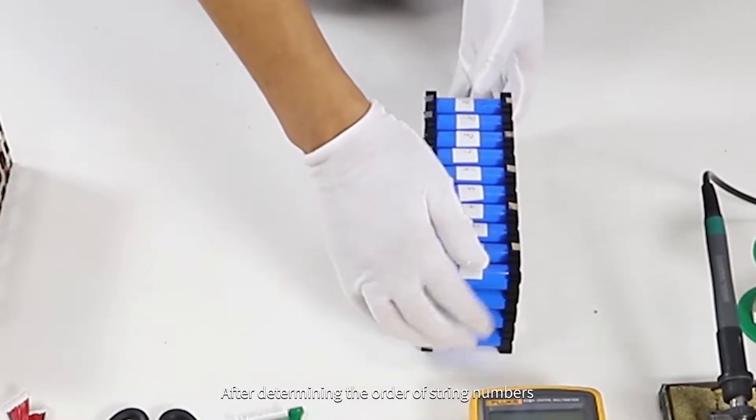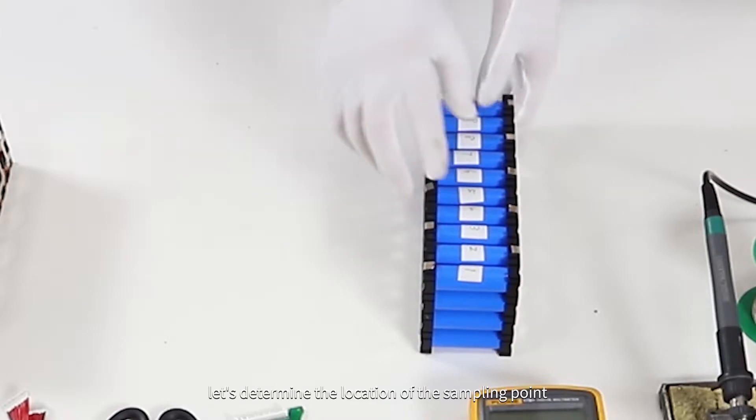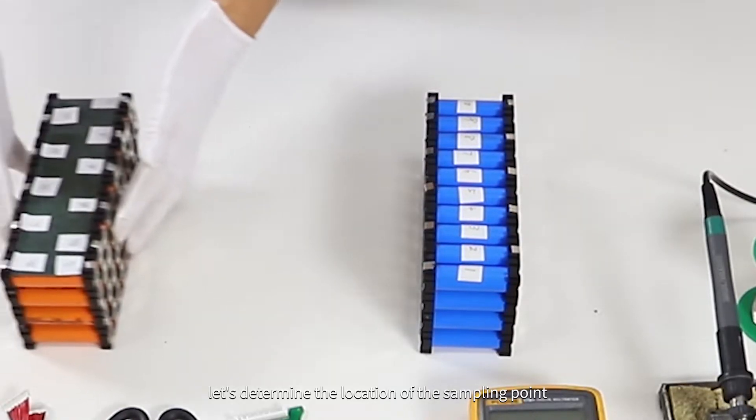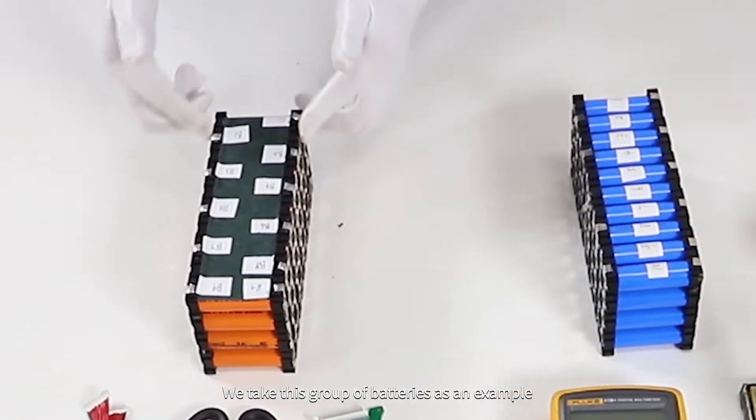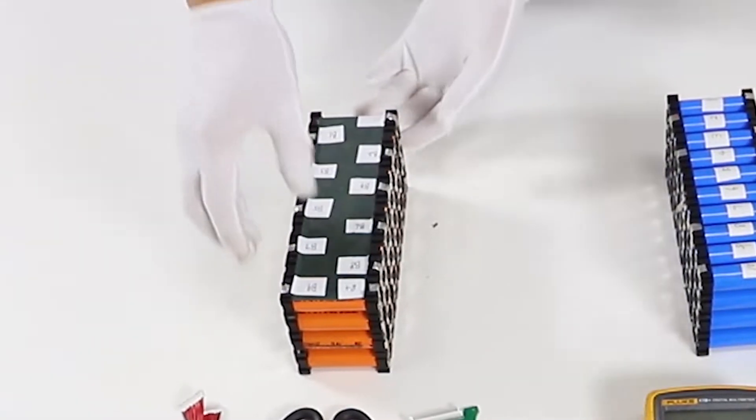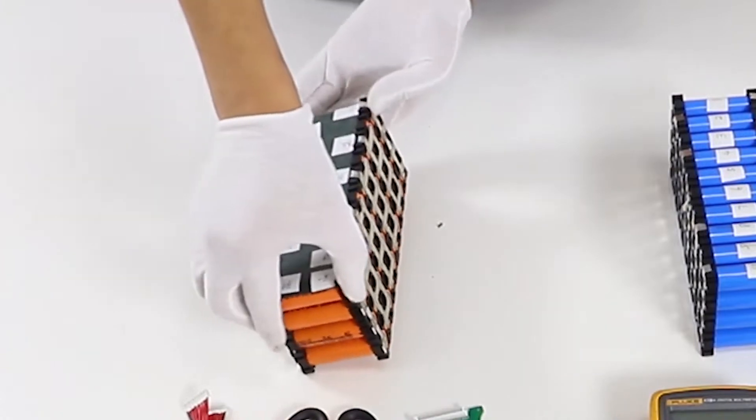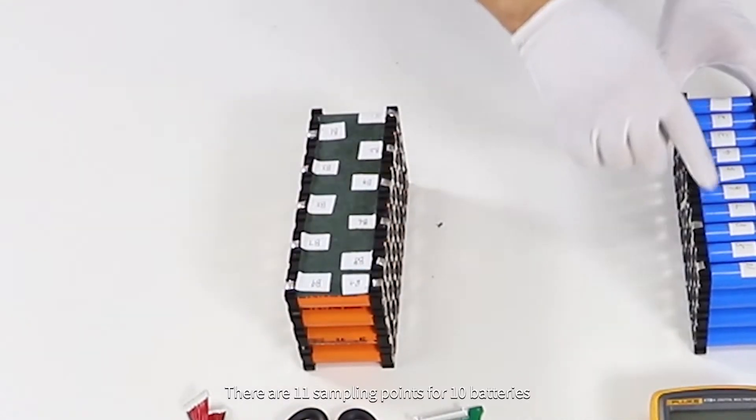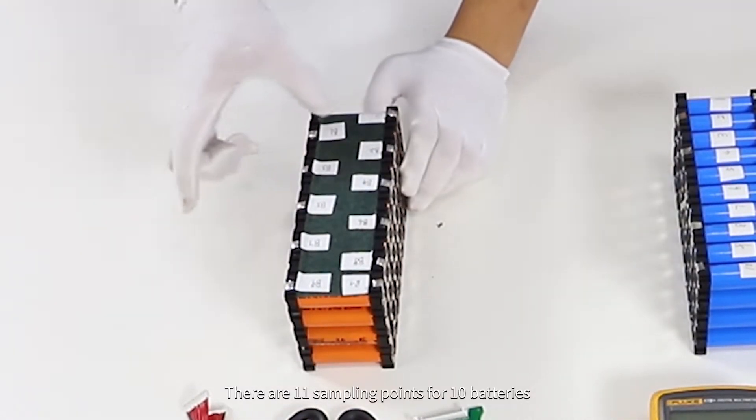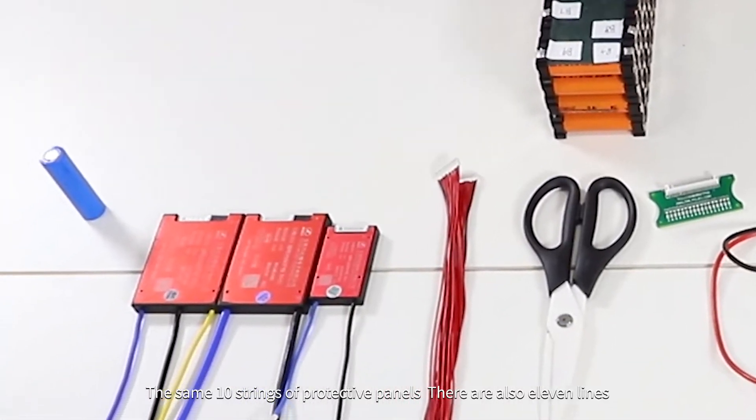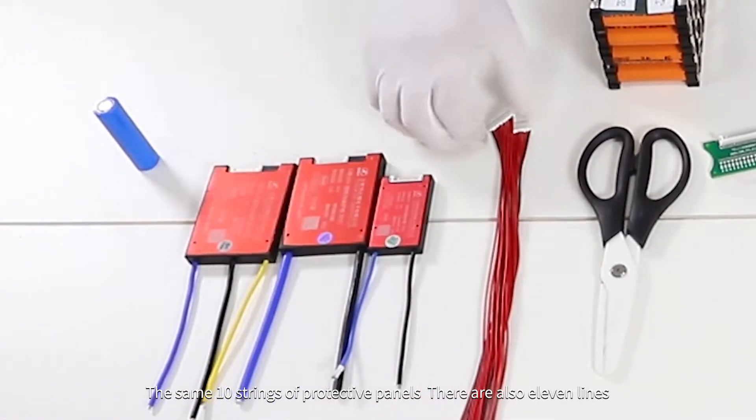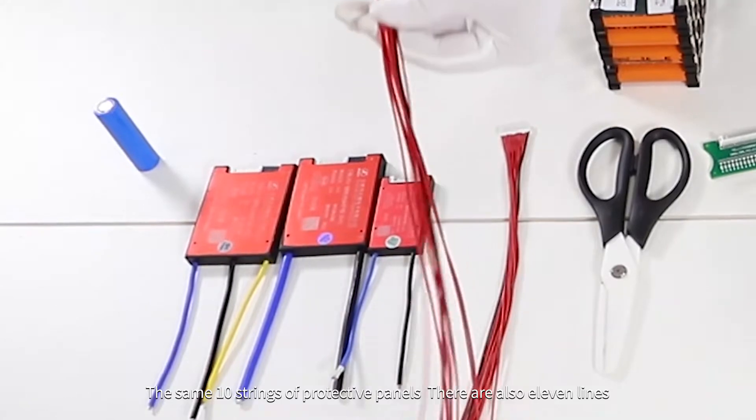After determining the order of string numbers, let's determine the location of the sampling point. We take this group of batteries as an example - this is a ternary 10-string battery. There are 11 sampling points for 10 batteries. The same 10 strings of protective panels also have 11 lines.